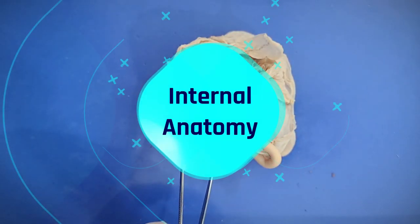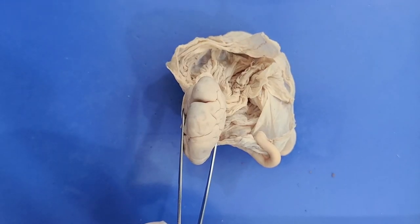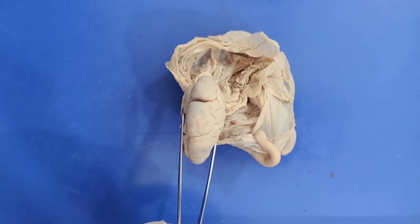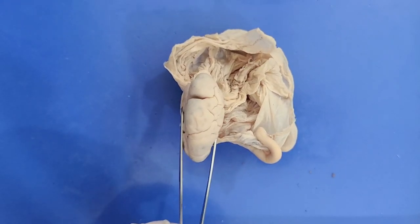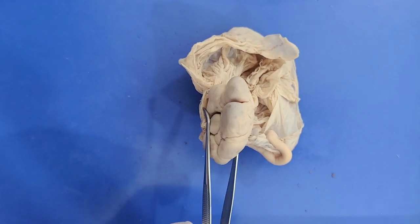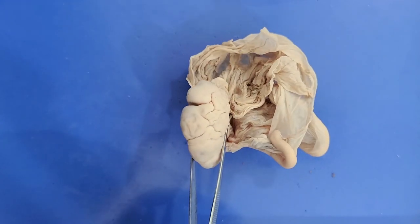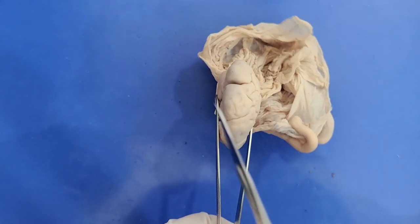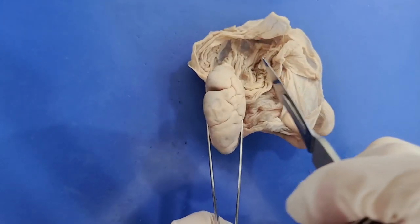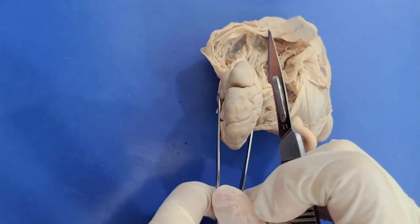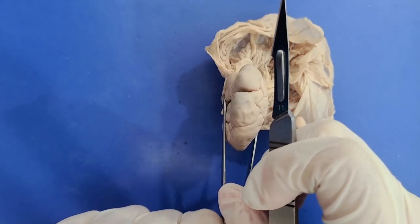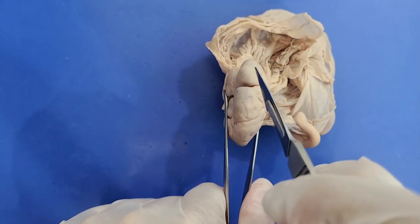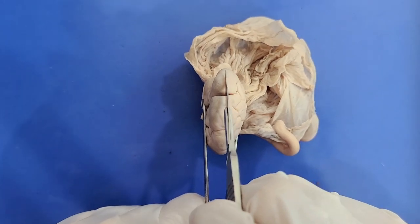Now let's get into the internal anatomy. I'm going to cut the ovary longitudinally — hold it steady, then take a scalpel and cut the stroma straight in half down the midline, then pry the sides apart.